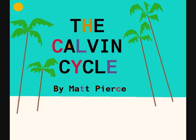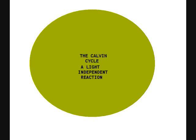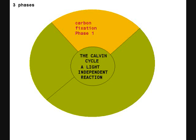The Calvin Cycle, by Matt Pearce. The Calvin Cycle is a light-independent reaction. There are three phases in the Calvin Cycle: Phase 1 is carbon fixation, Phase 2 is reduction, and Phase 3 is the regeneration of RuBP, or ribulose 1,5-biphosphate.